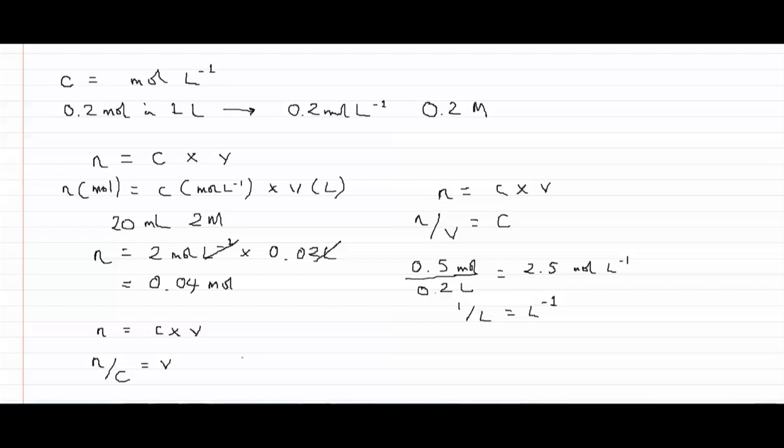We want to know what volume we would need to dissolve 0.5 moles in to get a two molar solution. If we put in the units—moles over moles per liter—we would end up with an answer of 0.25 liters.